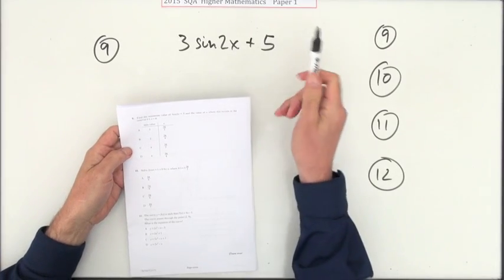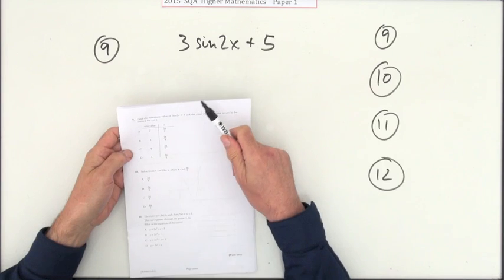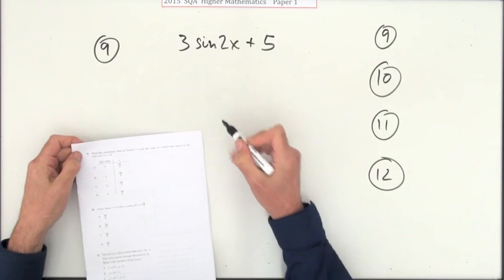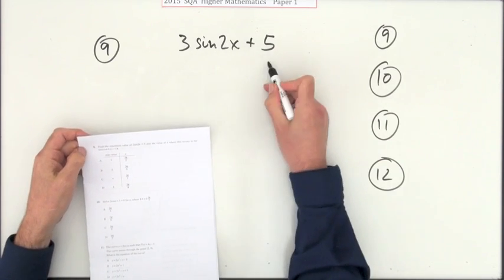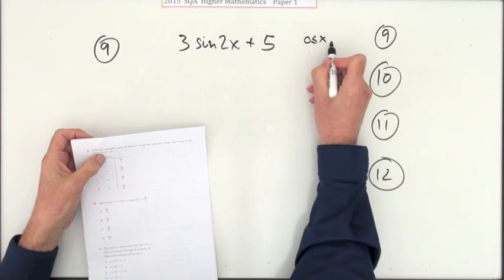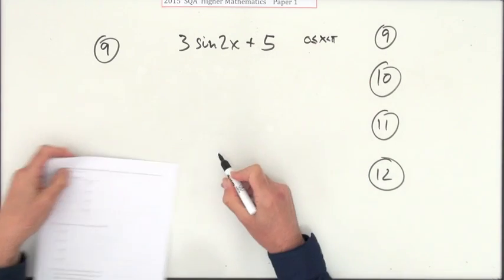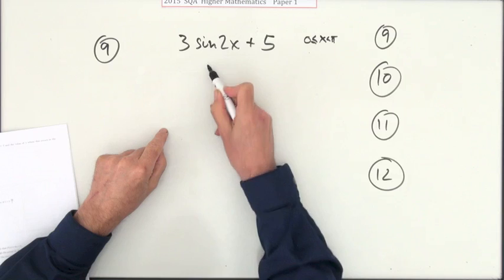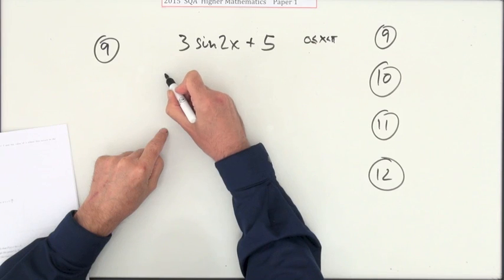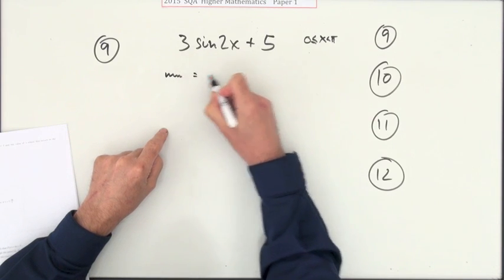Number 9 from Paper 1, the multiple choice part of the 2015 NODE Higher. It says find the minimum value of this in the interval x is between 0 and π. Well, sine can only go up and down 1, so the lowest it can get to is negative 1. So the minimum is going to be negative 3 plus 5, which is 2.